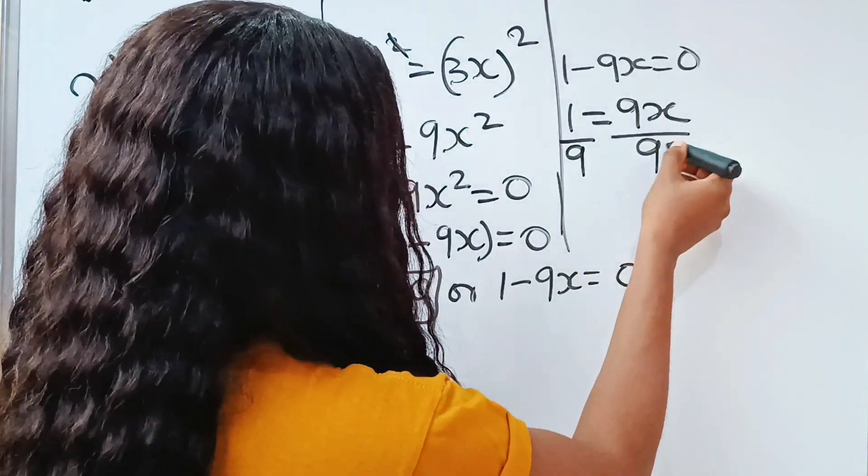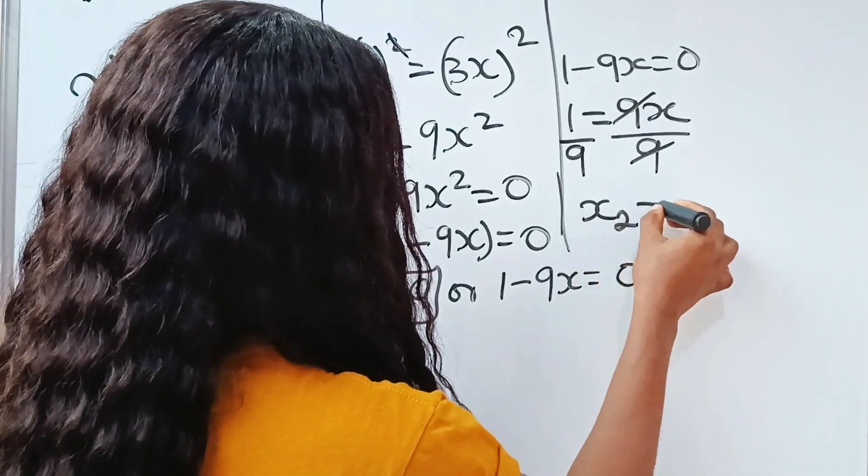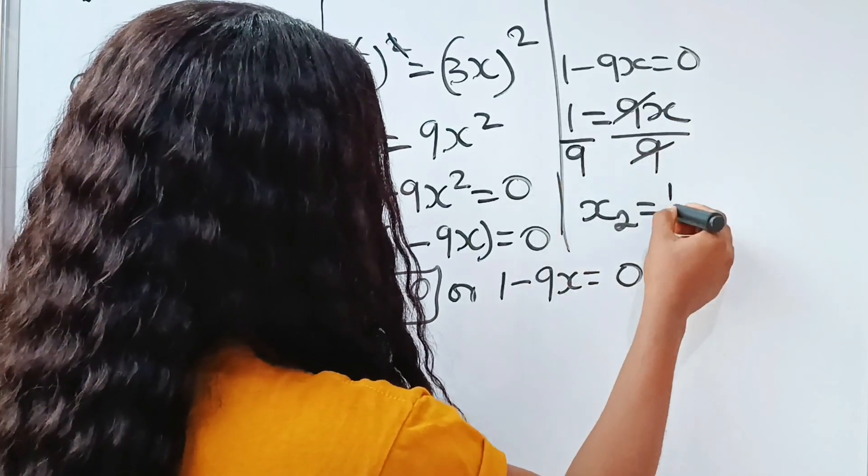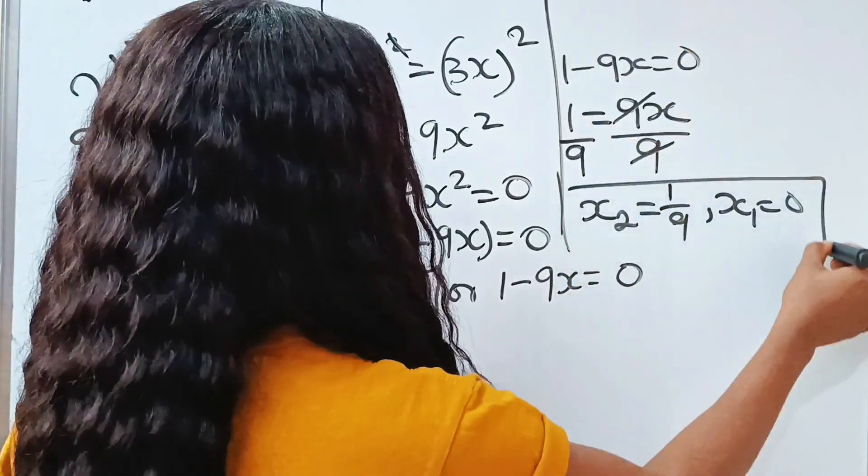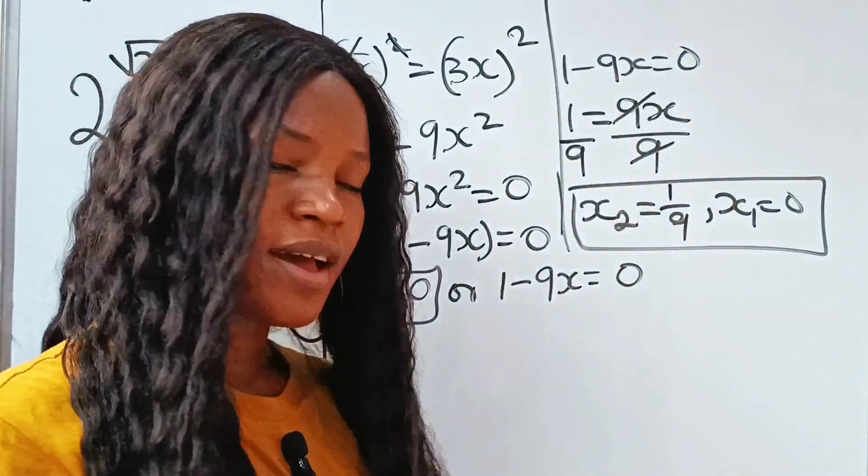So we have divided by 9, divided by 9. So we have that the second value of x is going to be 1 over 9. So we have the first value of x to be zero. So these are the two values of x.